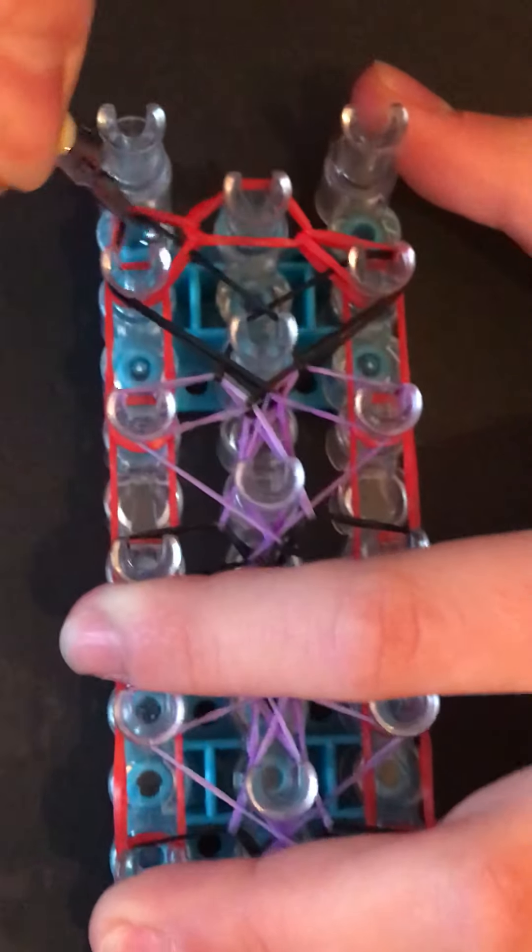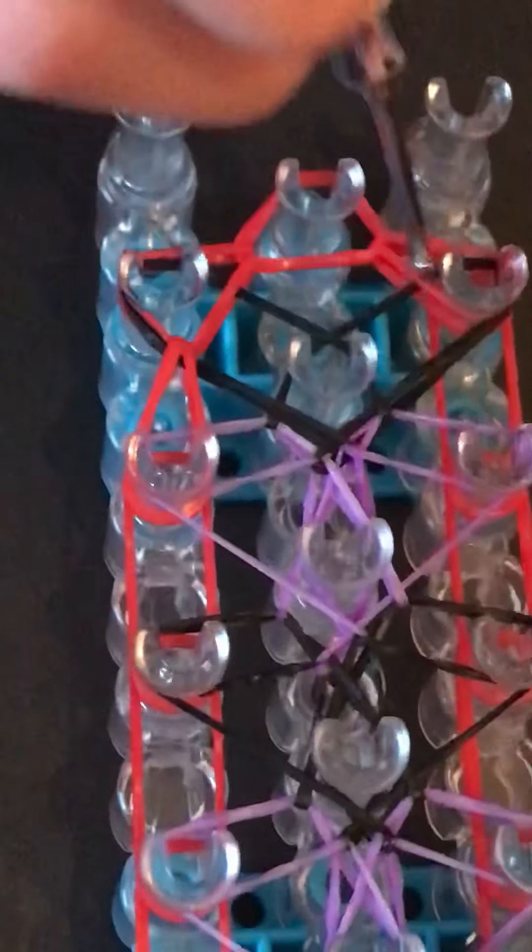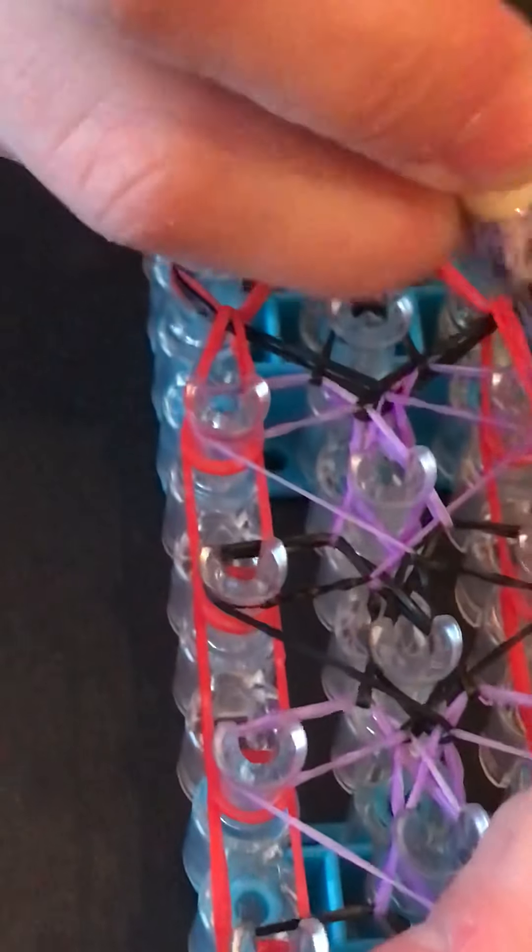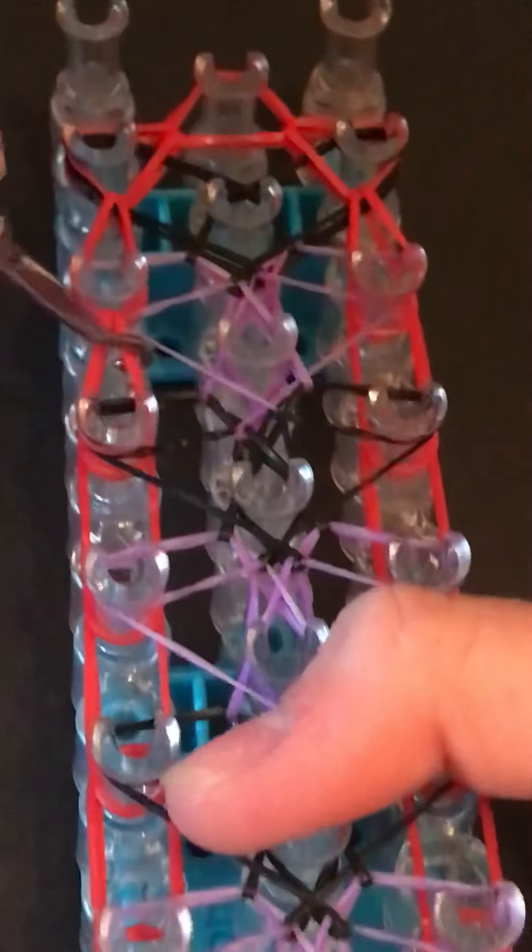Then do that again. Now go in, grab the bottom band, and pull it up on both sides. Then just do this all the way up your loom, grabbing the bottom band.